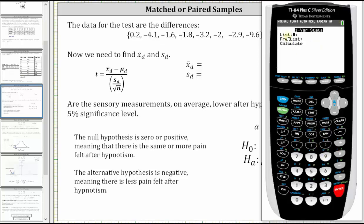The data is in L1, which is correct. If this was not L1, we would press second number one for L1. Go down to calculate, press enter. Notice the sample mean is negative 3.125. The sample standard deviation is approximately 2.911. Let's go ahead and record this information.